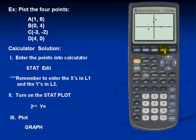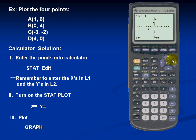We can use the Trace feature to pull out the coordinates. For example, point A has the coordinates 1, 6. I'll hit the left arrow key — it takes me to point B, whose coordinates are 0, 4. I'll hit the left arrow key again — it gives me point C, whose coordinates are negative 3, negative 2. And I'll left click one more time, and we see that point D has coordinates 4, 0.